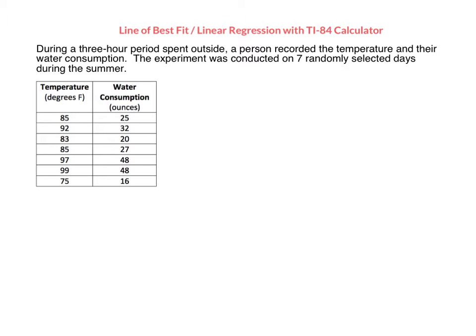We're going to look at this problem here. During a three-hour period spent outside, a person recorded the temperature and their water consumption. The experiment was conducted on seven randomly selected days during the summer, and our data is recorded here in the table. The temperatures are going to be the x values in our equation, and the water consumption is going to be the y values in our equation.